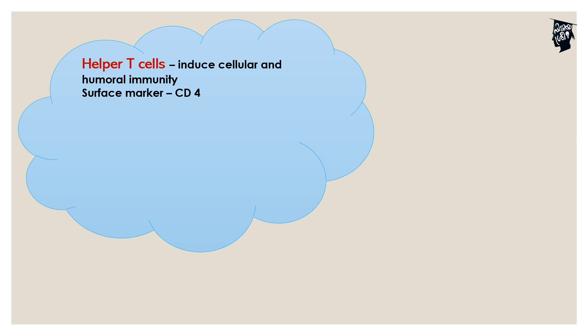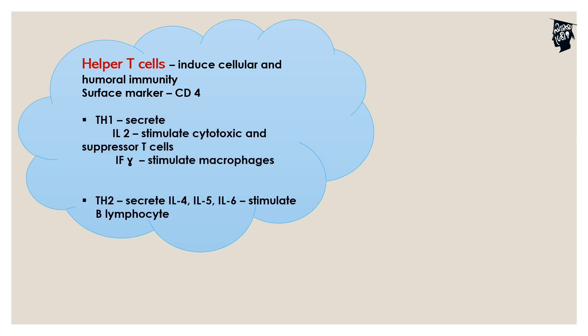Helper T-cells are of two types: Th1 and Th2. Th1 secretes interleukin-2 and interferon-gamma. Th2 secretes interleukin-4, interleukin-5, and interleukin-6. Th1 helper cells assist cell-mediated immunity because interleukin-2 stimulates cytotoxic and suppressor T-cells, whereas interferon-gamma stimulates the macrophages.